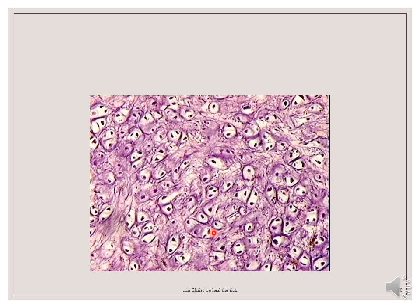In addition to the type 2 collagen found in the matrix of cartilages, the matrix of the elastic cartilage contains numerous bundles of branching elastin fibers. Elastin fibers stain black or dark purple with elastin stain. So here our elastin fibers are appearing dark, and this dark network of fibers can be seen throughout the extracellular matrix. We can see a network of fibers running through this extracellular matrix — unlike what we saw in our hyaline cartilage where we have a homogeneous matrix.